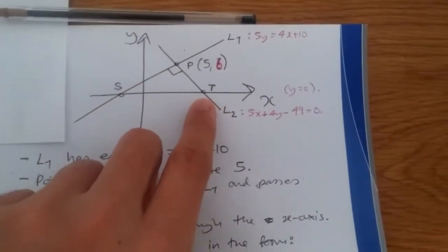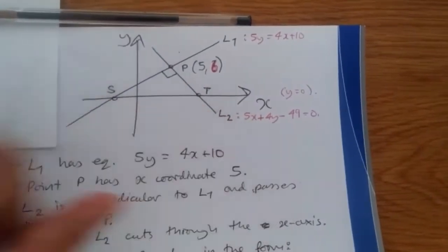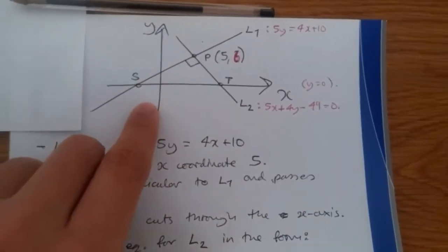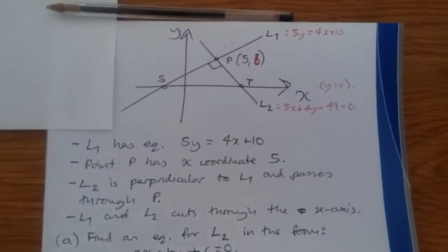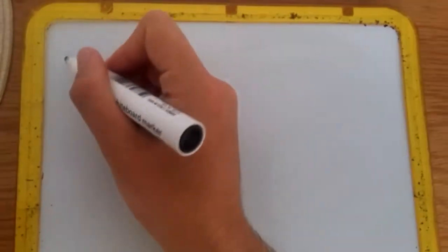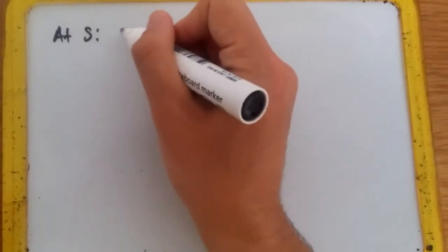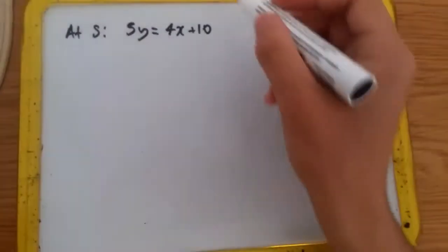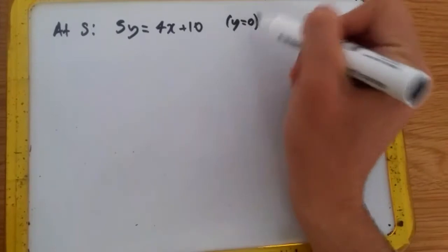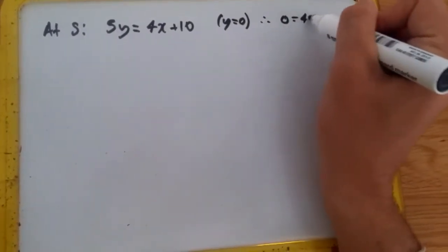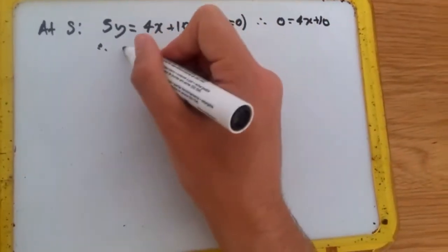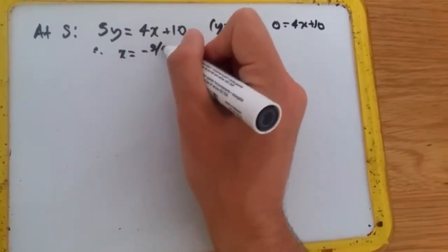So really, we just need to use this equation, set y to 0 and find x for both. Quite straightforward. And the triangle SPT is just this shape here with vertical height and base. Use the area of the triangle formula. So at point S, we're going to use the equation 5y = 4x + 10. We can find S when y = 0. So when y = 0, we have 0 = 4x + 10. Rearranging, subtracting 10 and dividing by 4 gives us x = -5/2. Easy.